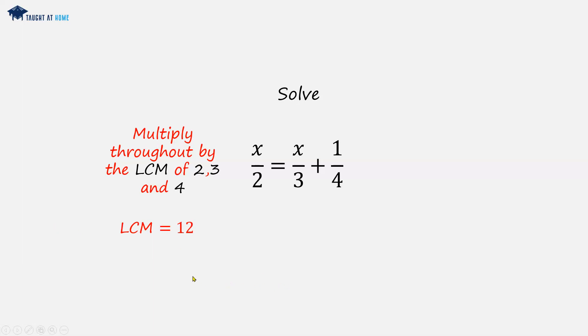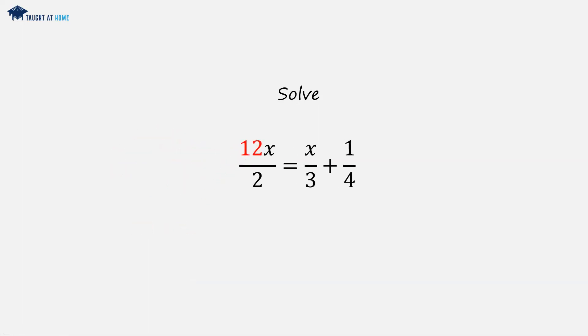So we can multiply each of these terms by 12. Let's do this. Let's multiply the first term by 12, and then on the right hand side we'll multiply both terms by 12. Now we can simplify the fractions.